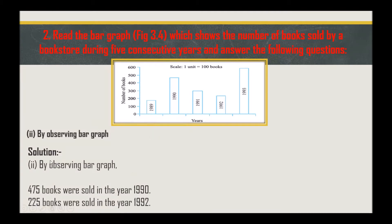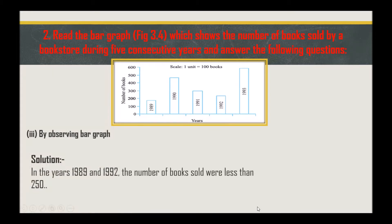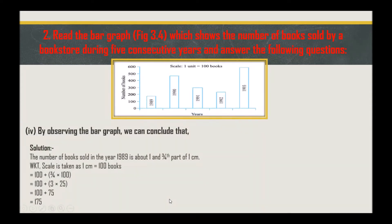By observing the bar graph, there are 475 books in 1990 and 225 books in 1992. In 1989 and 1992, the number of books sold were less than 250. For 1989, the bar is about one and three-fourth centimeters, and since the scale is one centimeter equals 100 books: 100 plus (3/4) × 100 = 100 plus 75 = 175 books.